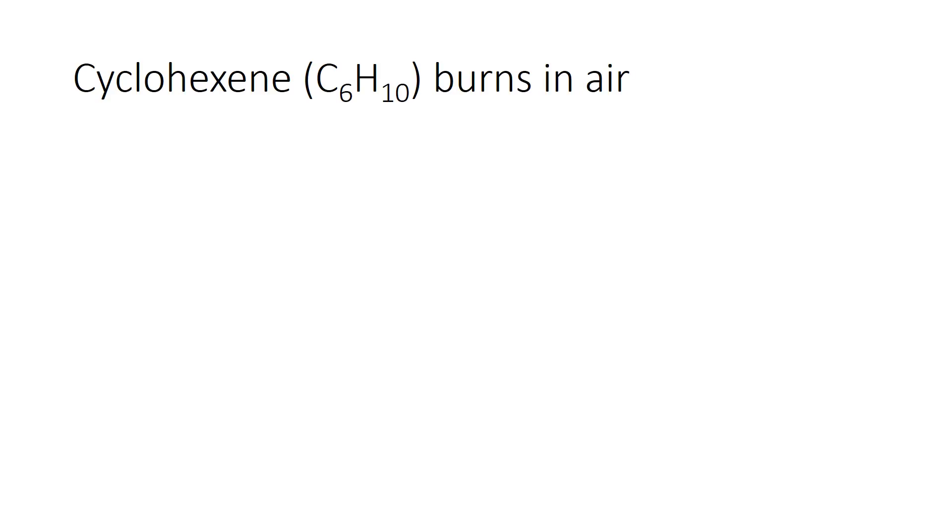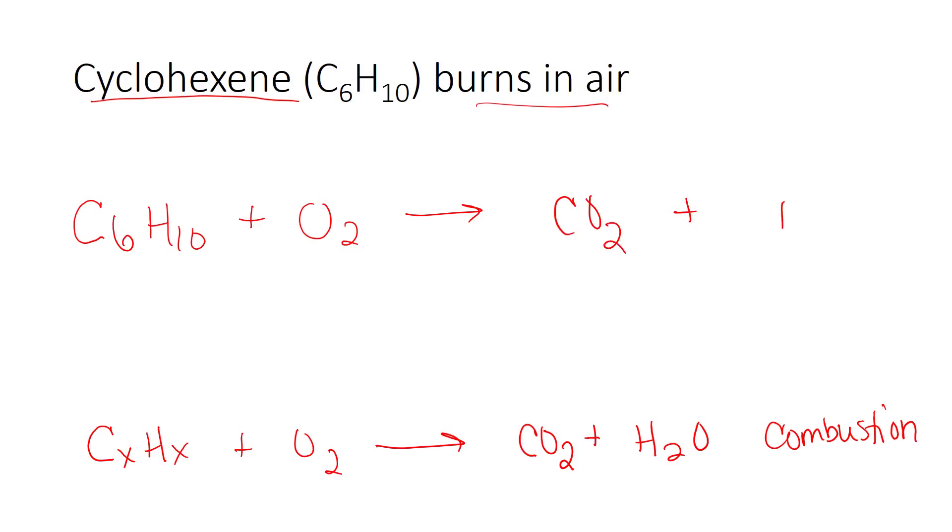In this problem, we are told that cyclohexane, and we're given the formula for that, burns in air. So cyclohexane is our compound, and burning in air means plus O2. So let's start writing this out: C6H10 plus O2, and I need to think about what type of reaction this is. I noticed that I only have carbons, hydrogens, and oxygens present. I don't care what the amounts of those carbons and hydrogens are, but that tells me that this is a combustion equation. In a combustion equation, there's no swapping, there's no moving around. You always wind up with the same two products, and that is CO2 and H2O.